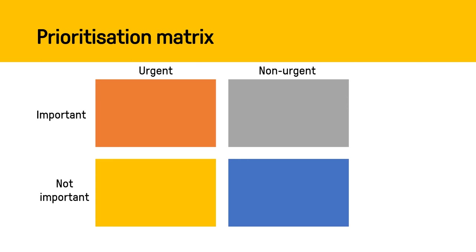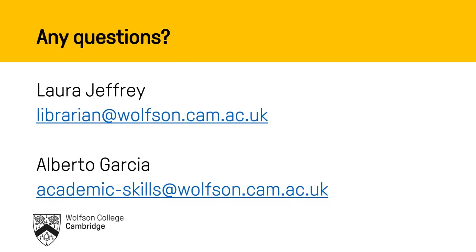So have a go. Break up your list of tasks that you've already defined, put them into these four quadrants, and it will help you see if you are constantly operating at a crisis level. It will also help you see if there are things you can cross off your list that aren't that important or urgent. There's lots more information on the College Lib Guide, but if you would like to speak to Alberto or myself, please get in touch and we can arrange a one-to-one appointment.